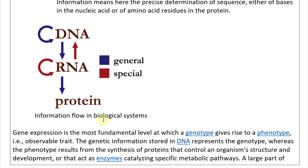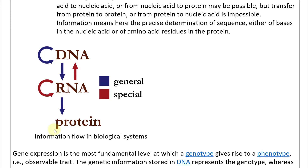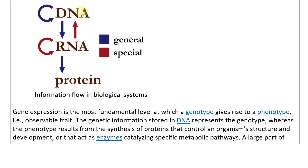Here is a diagram of information flow in biological systems. DNA can go to RNA and back, or DNA can replicate itself. The general case goes from DNA to RNA to protein. The special case — shown in red — includes RNA replicating itself, RNA to another RNA, or RNA going back to DNA. So the general flow is DNA to RNA to protein, with special cases of RNA to RNA and RNA to DNA.